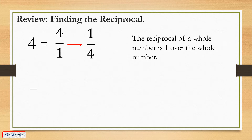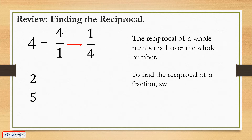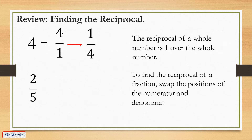To find the reciprocal of a fraction, swap the positions of the numerator and denominator — interchange the numerator and denominator. So the reciprocal of 2 fifths is 5 over 2, or 5 halves.